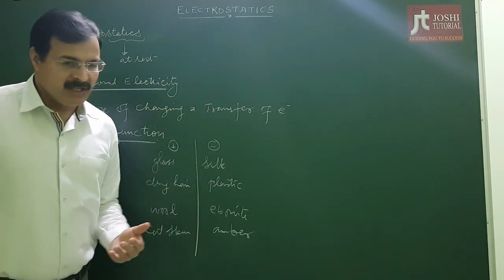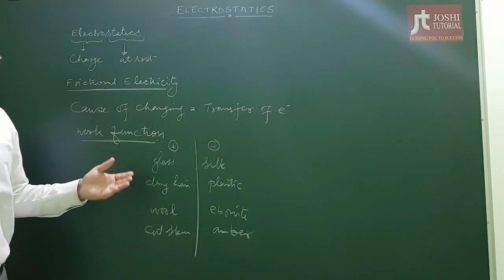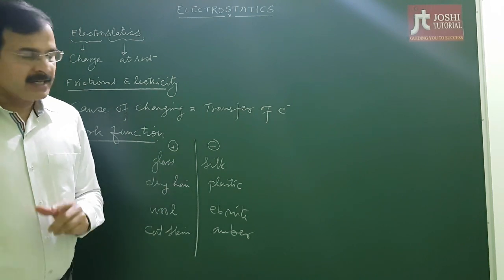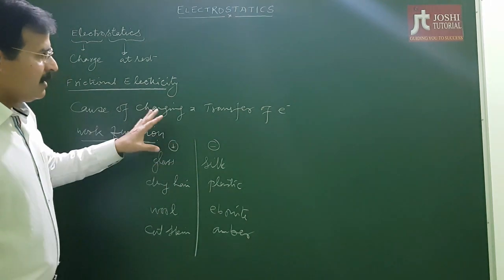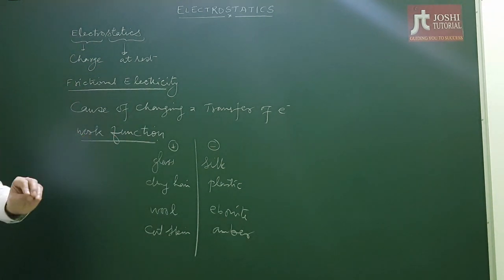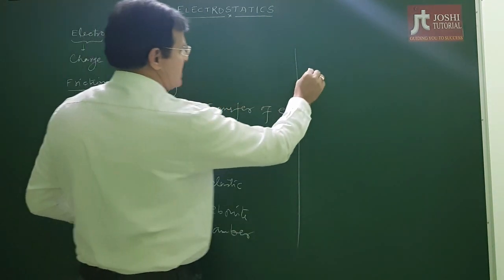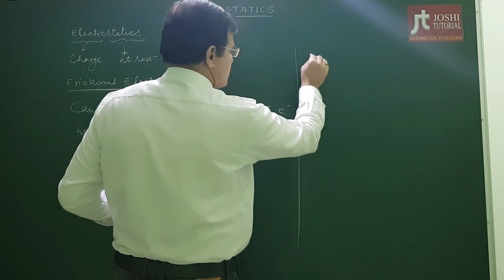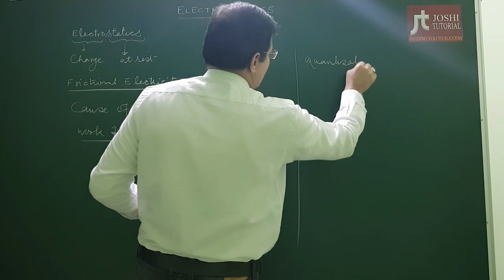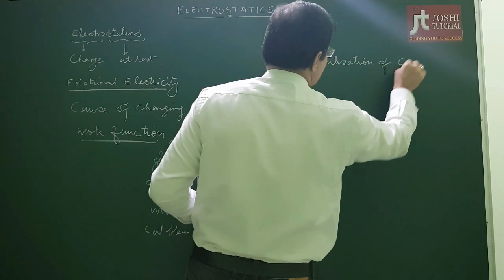Benjamin Franklin named these charges as positive and negative. These are also called vitreous and resinous charges — vitreous means positive, resinous means negative. Now we talk about an important property of charge: quantization of charge.